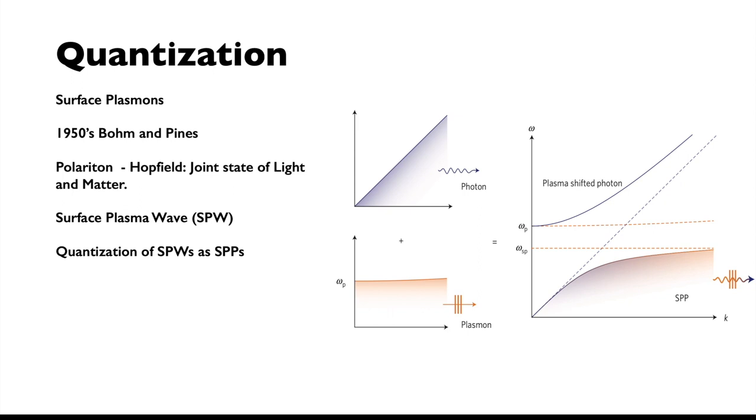Soon after, the concept of surface plasma wave was put into practice, and using Hopfield's approach, were first quantized as SPPs. Here we see this quantization illustrated with the coupling of a photon and a surface plasmon, resulting in a plasma-shifted photon and an SPP as the joint state of light and matter.